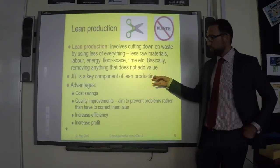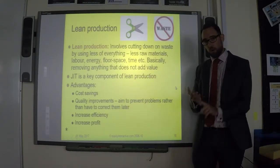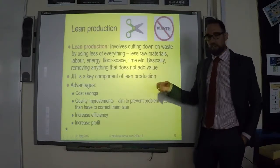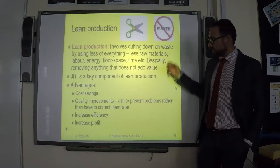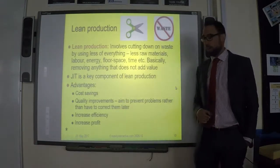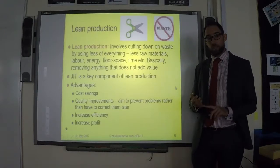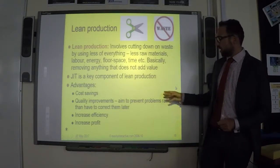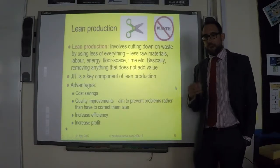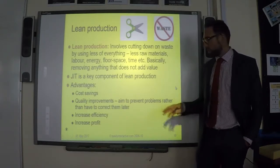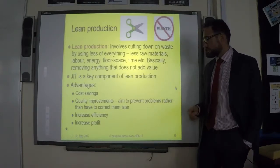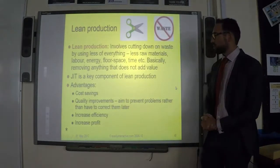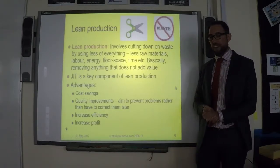JIT is a key part of lean production because it means we don't need a warehouse, we don't need to pay for storage or electricity, and we don't have damaged components sitting in storage. The benefits of lean allow us to get our costs down — we waste less raw materials, pay fewer unnecessary workers, and waste less time. Quality improvements follow because we have fewer defects, and all of this leads to an increase in profit.